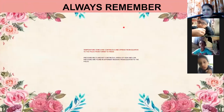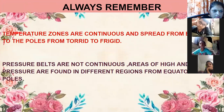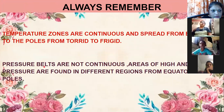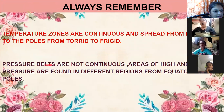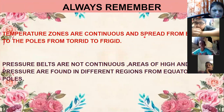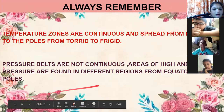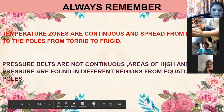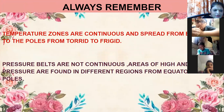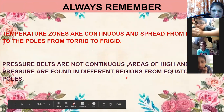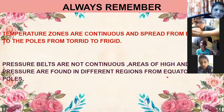You should always remember — as you studied about temperature zones, you also studied about pressure belts today. Temperature zones are continuous, but pressure belts are not continuous. Temperature zones spread from the equator to the poles — that is from the torrid zone to the frigid zone. Pressure belts have areas of high and low pressure found in different regions from equator to the poles.